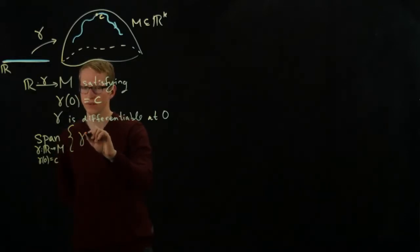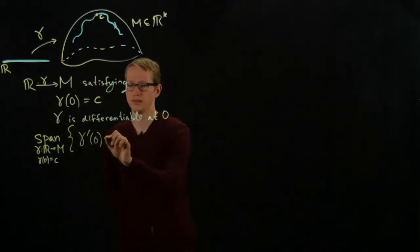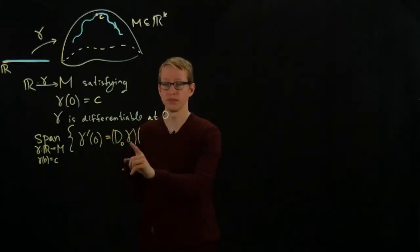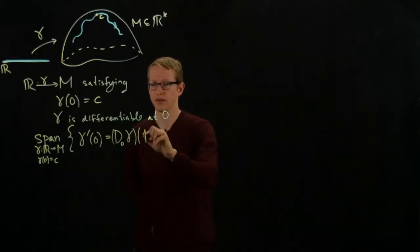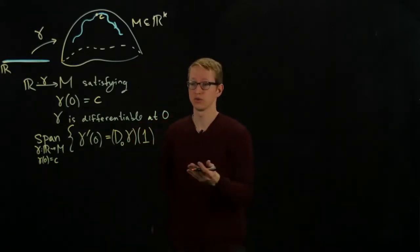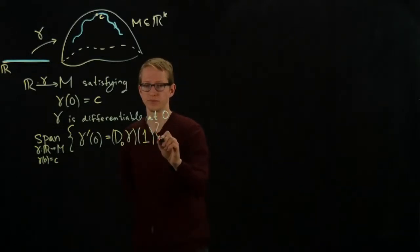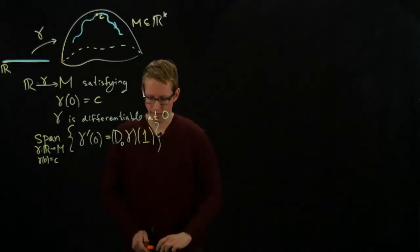So we can look at the span of all of the vectors gamma prime 0. Now in terms of our earlier notation, this is exactly the same thing as the differential at the point 0 applied to gamma at the vector, remember this is now a matrix, in fact, it's a K by 1 matrix at the vector 1. There's only one vector in, there's only one unit vector in R, and that unit vector we denote by 1.